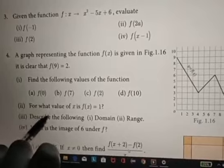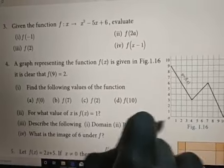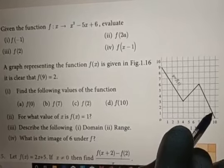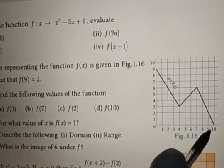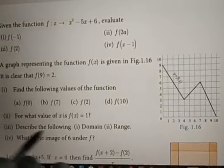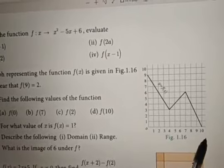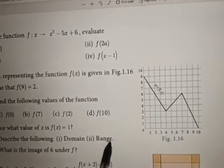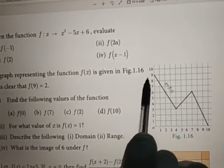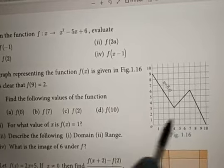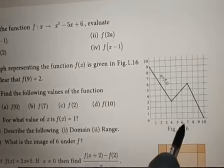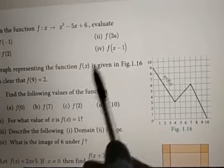For what value of x is f(x) = 1? Look at y = 1 on the graph — it falls between 9 and 10 on the x-axis, so x = 9.5. Domain: all input values shown, which is {0, 1, 2, ..., 10}. Range: all output values shown, which is {0, 1, 2, ..., 9}. The image of 6 under f: for x = 6, the y-value is 5, so the answer is 5.